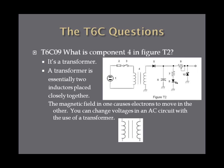What is component four in figure T2? Component four is a transformer. A transformer schematic looks like two schematic symbols for an inductor placed closely together — and that's exactly what a transformer is. In a transformer, the magnetic field in one inductor causes electrons to move in the other inductor. A transformer can change voltages in an AC circuit; for example, if you've traveled overseas and need to plug an American electric razor into a European outlet, you need a transformer to change the voltage from 220 to 120.